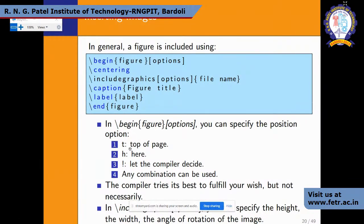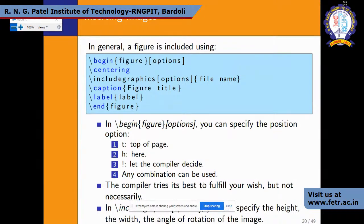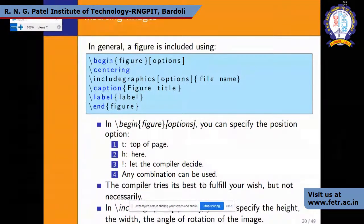When using figure placement options, 'h!' means you want the figure placed here and the compiler decides the best fit. Any combination of placement options can be used depending on what you want. If you want the figure at the top, use 't'; if you want it after a particular paragraph, use 'h!'. The compiler tries its best to fulfill your wish, but sometimes you may need to adjust the figure size and alignment to meet your requirements.